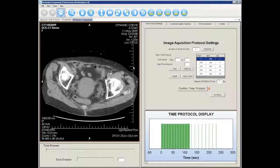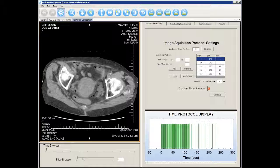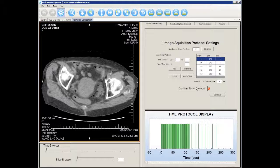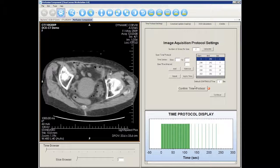Once the DCE Tool is launched, the screen is divided into three sections. The left side contains your image dataset and a time browser to help you browse through the images. The right side is the image acquisition protocol settings.